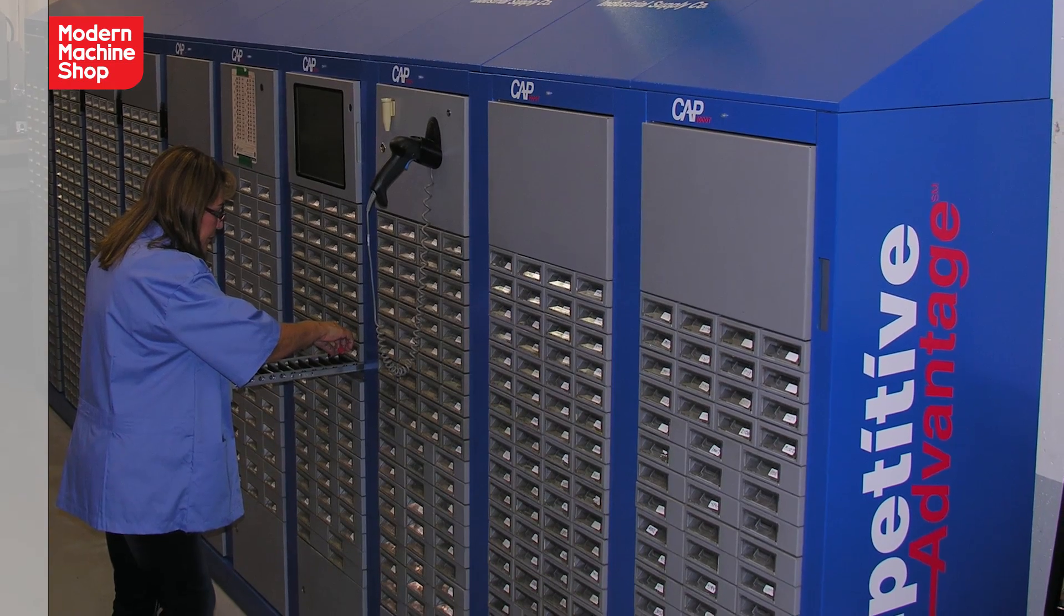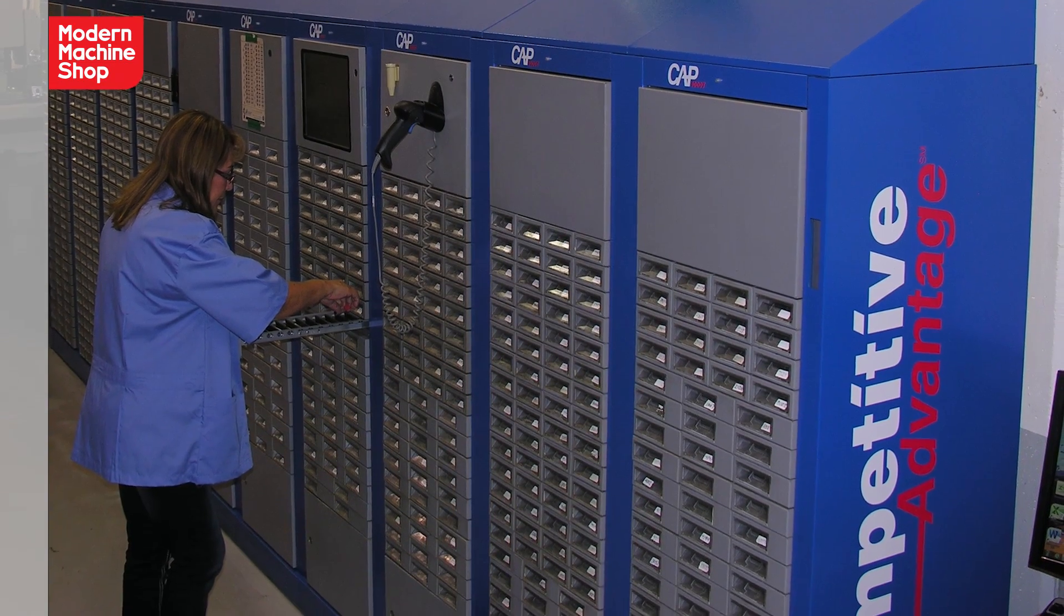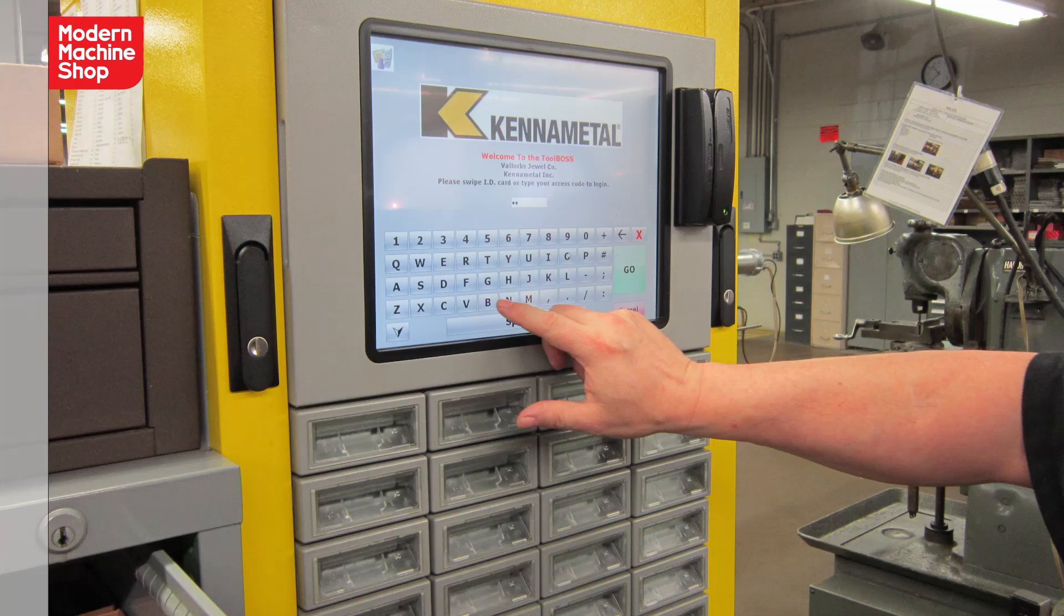I don't understand why more shops don't have vending systems for improved tracking and cost control for their cutting tools. Think about how many times you've had to overnight a tool because you thought you had it on hand, but it turns out you didn't. A vending system will automatically order tools when they get to a certain level so you don't have to worry about these problems.